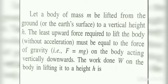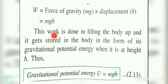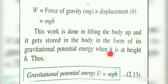The work done W on the body in lifting it to height h equals force into displacement. Here the force equals the force of gravity mg and the displacement is h, so work done W = mgh. This work is stored in the body as gravitational potential energy. Therefore gravitational potential energy U = mgh.